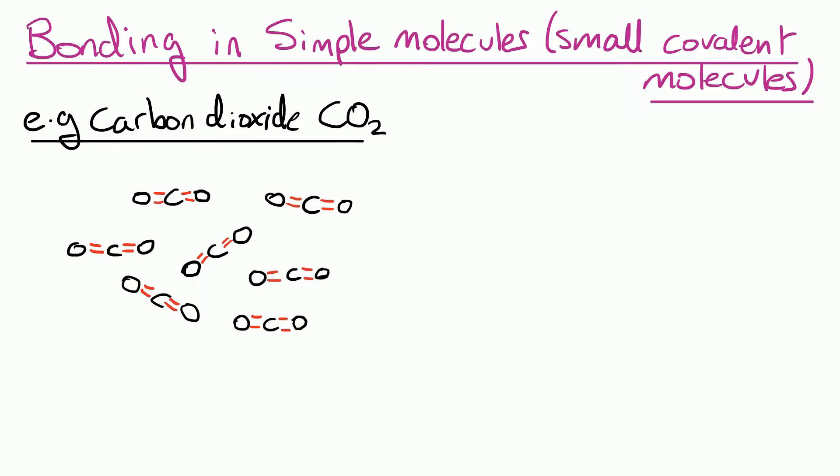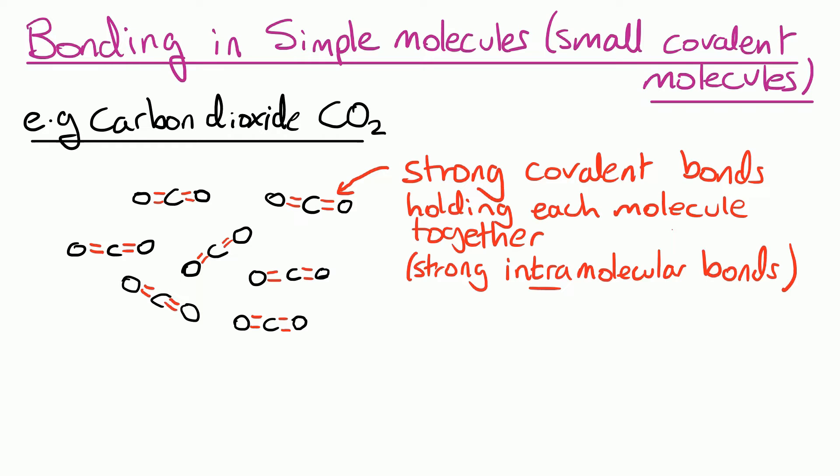So if we take carbon dioxide as an example we can see there several molecules of CO2. And the red bonds are showing the strong covalent bonds holding together each molecule. And we call these strong intramolecular bonds. This means bonds within or inside the molecule.